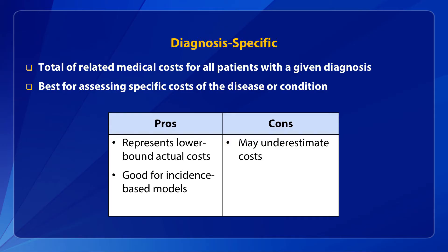Alternatively, we could include only those medical costs in the hypertension population that are explicitly related to hypertension. This approach allows us to assess the percentage of medical costs attributable specifically to hypertension and not to other reasons for seeking health care, such as teeth cleaning. The advantage is that it's conservative, representing the lower end of the range of actual costs, and it can be applied easily to incidence-based models assessing lifetime costs. However, this approach may underestimate costs if comorbid events aren't included — for example, if people with hypertension also have cardiovascular disease, the costs of CVD attributable to hypertension may not be counted.